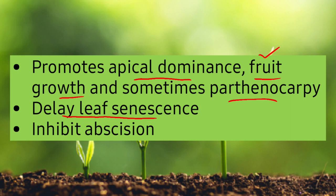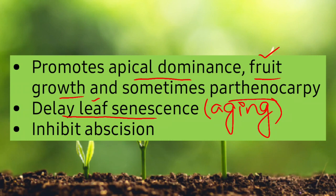Leaf senescence is a natural process in plants which we can generally call aging. In this process, leaves that have aged or died fall off the plant — just as we see in autumn when leaves change color and then fall. That is called leaf senescence. But since auxins stimulate growth, they delay leaf senescence — they ensure the attachment of leaves to the plant and delay the process of their falling.